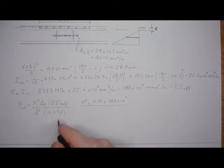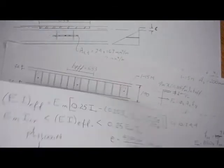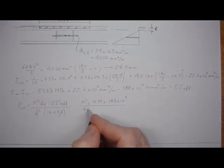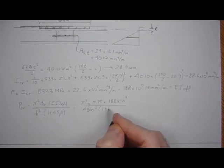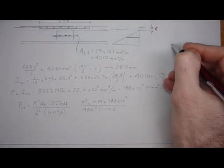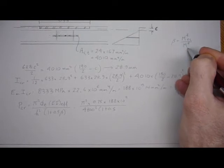And the EI effective is right here, 188 times 10 to the 9, over the height squared, and it's a 4800 high wall.